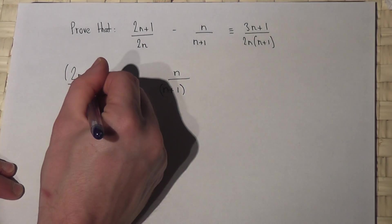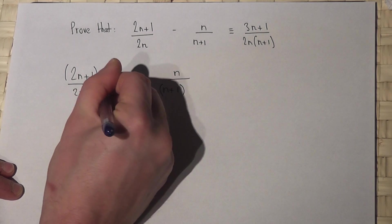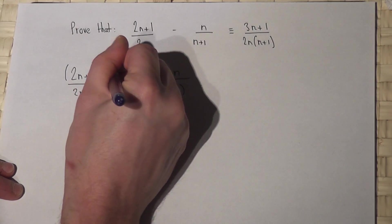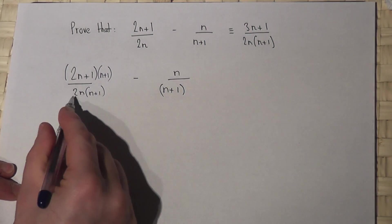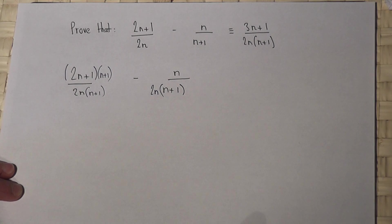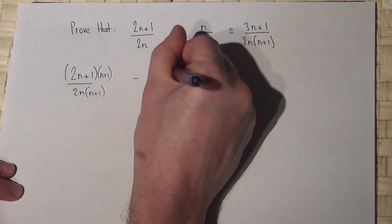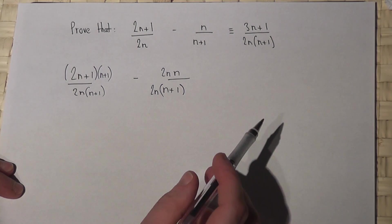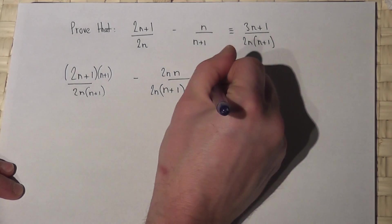There's an (n+1) down here, so I can put (n+1) down here as long as I put it on the top as well. There's a 2n down here, so I can put 2n down here as long as I put it on the top as well. These fractions are still the same fractions.